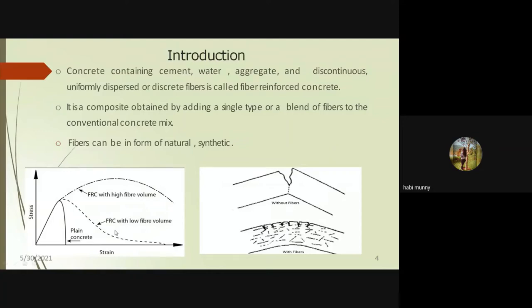In general, concrete contains cement, water, aggregate, along with discontinuous and uniformly dispersed fibers — this is fiber reinforced concrete. We can add fibers as a single type or a blend to a conventional mix, and fibers can be in the form of natural or synthetic materials.